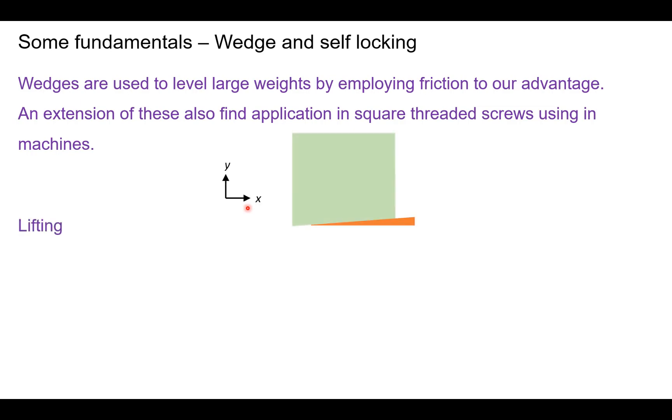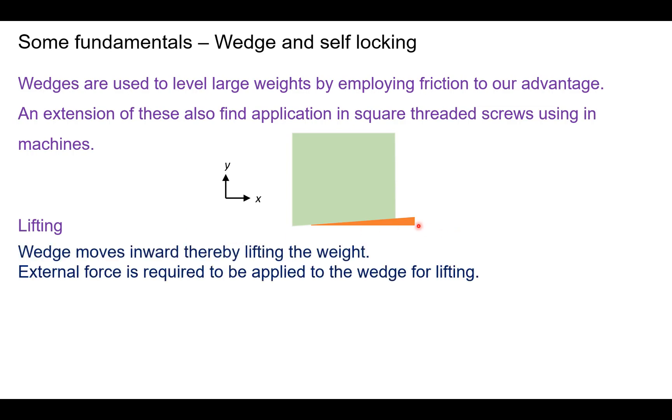If we were to consider a block and a wedge as shown, the lifting operation can be carried out by applying an inward force to the wedge in order to lift the weight. And this external stimulus is required to be applied to the wedge for lifting throughout the process. And we can see from this animation how the wedge moves inward and the weight gets lifted upwards.